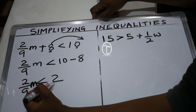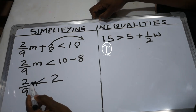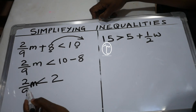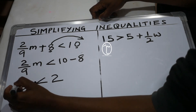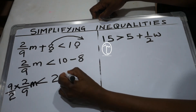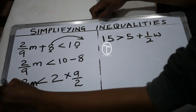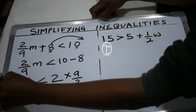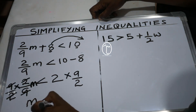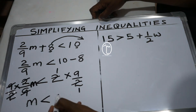So (2/9)m is less than 2. To get the value of m, we multiply both sides by the reciprocal of 2/9, which is 9/2. On the left, 2 cancels with 2 and 9 cancels with 9, leaving m. On the right, these 2s cancel and we are left with 1 times 9, giving m is less than 9. That is the value of m.